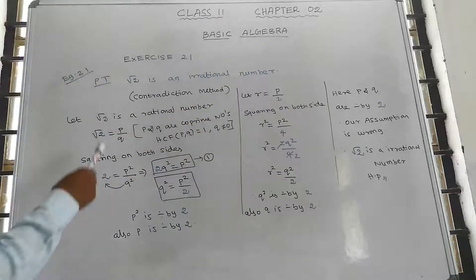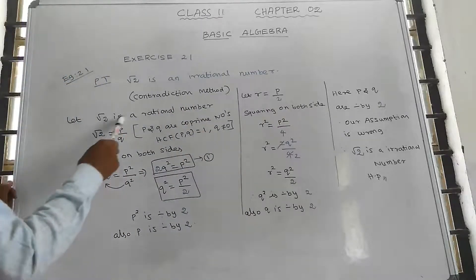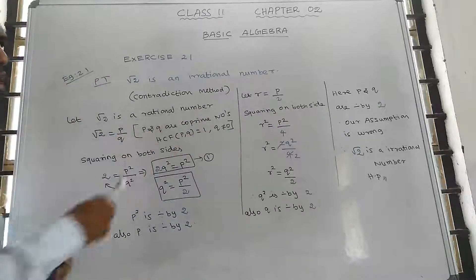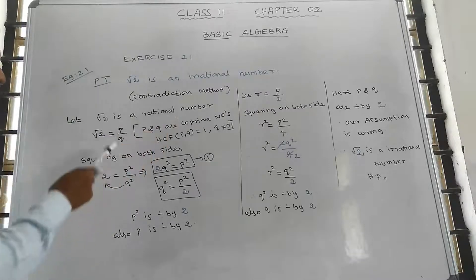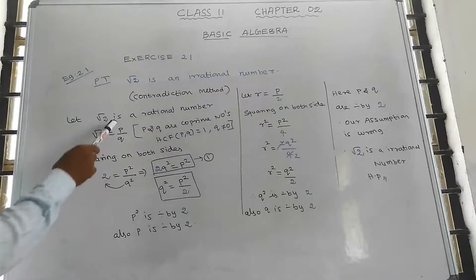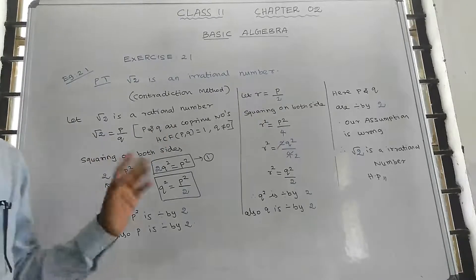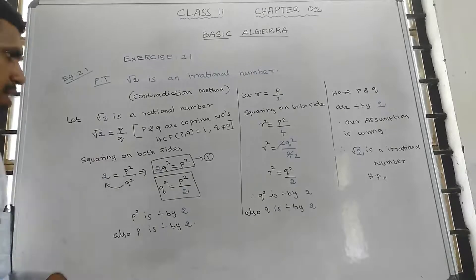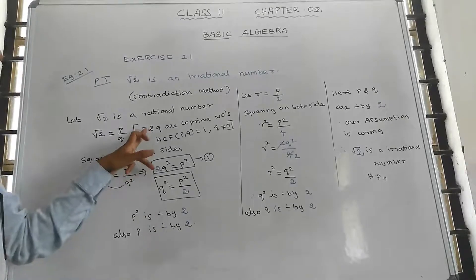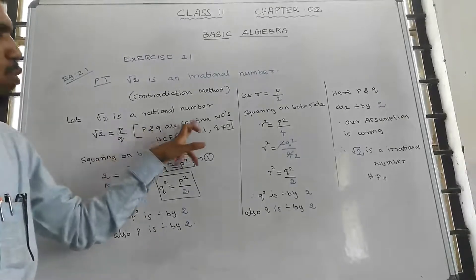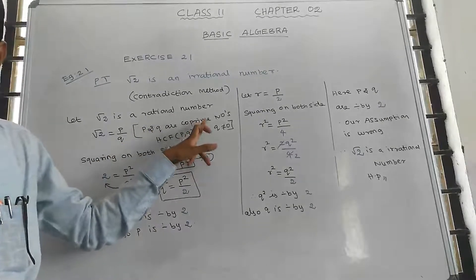We assume root 2 is a rational number. Root 2 can be written in p by q form — p divided by q is called a rational number — where p and q are co-prime numbers.